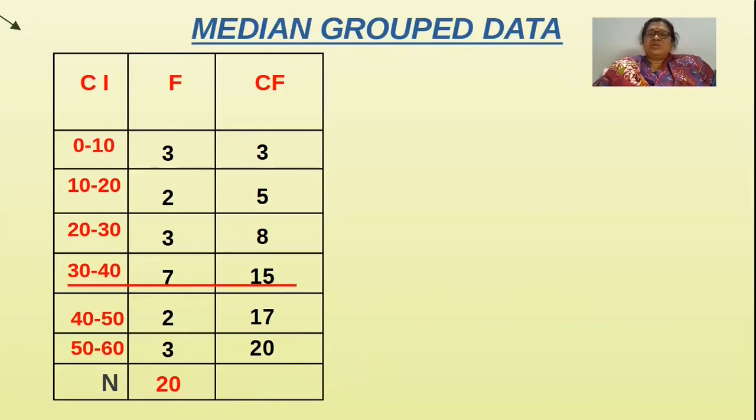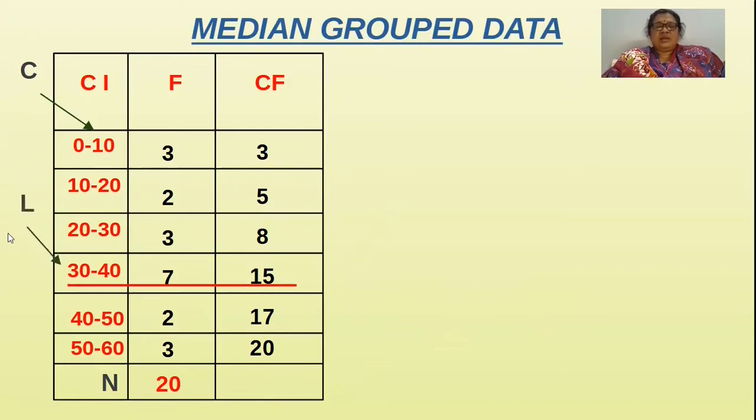Now we will write down the formula for median. Before that we will see what is the length of a class. Here the median row is this. The highest frequency is 7. You have to underline that row like this. This is the length of a class, that is 10. The median class, what is the lower one? That is L. How much is it? 30.